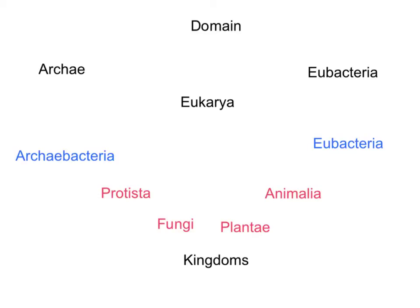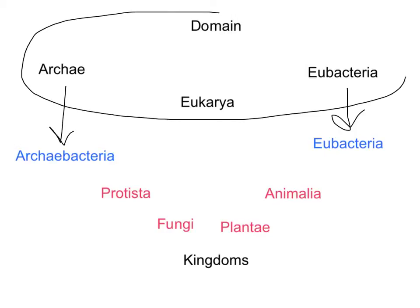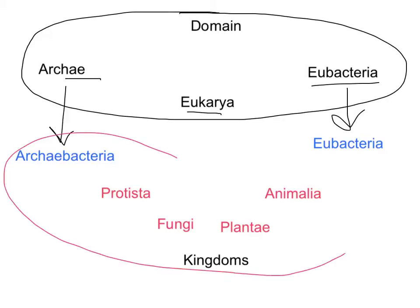Today's video is going to finish up with the kingdoms. Last time we talked about the Archaea bacteria kingdom as well as the Eubacteria kingdom. Remember, we have three domains — that's our biggest, broadest classification area. We had three domains: the Archaea, the Eukarya, and the Eubacteria domain. Last time we covered the Archaea domain and its bacteria, as well as the Eubacteria domain and kingdom.